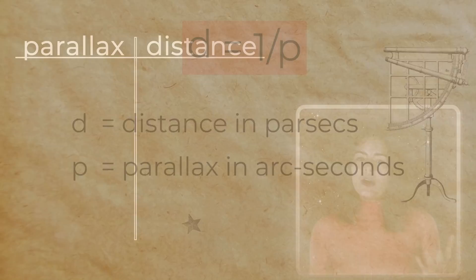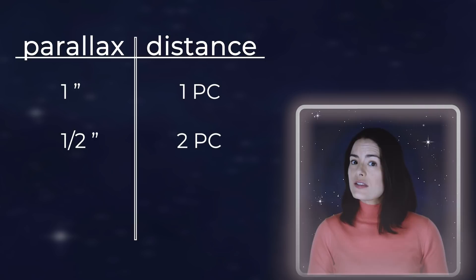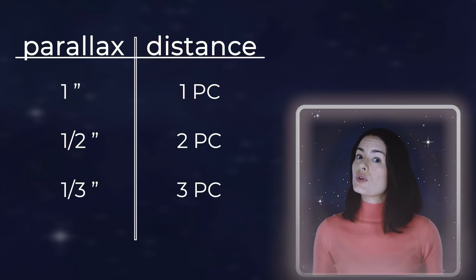Put another way, if you see a star with one arc second of parallax, it's 1 parsec away. If it has one-half arc second of parallax, it's 2 parsecs away. One-third arc second, it's 3 parsecs away. You get the idea. Just like our finger, the closer a star is to us, the bigger the jump.